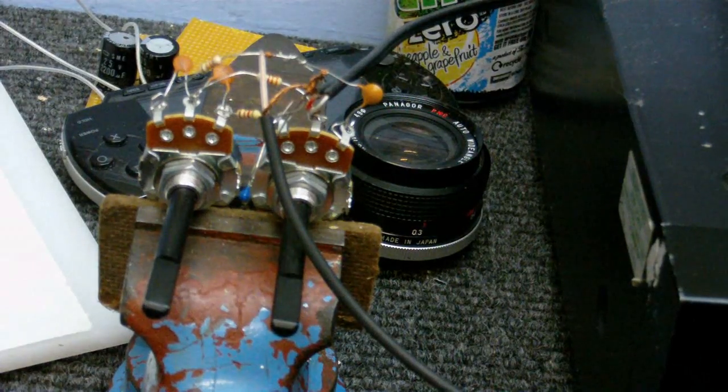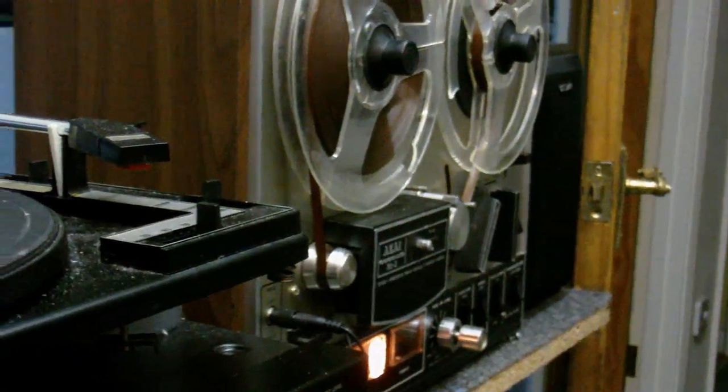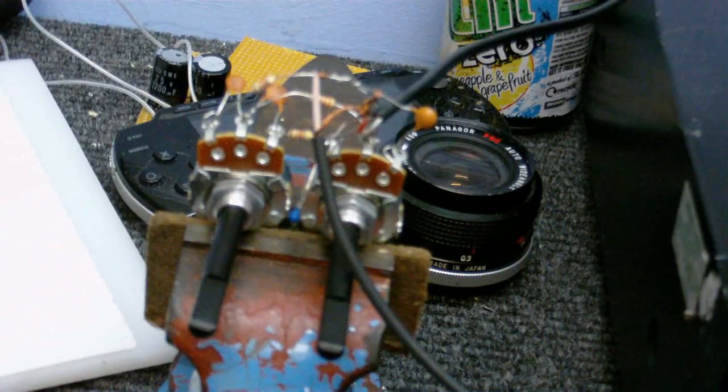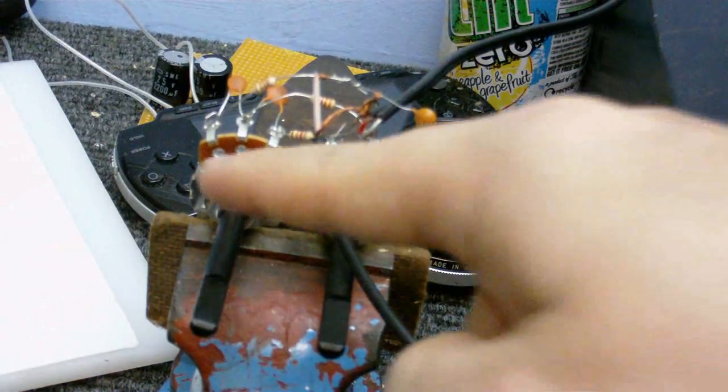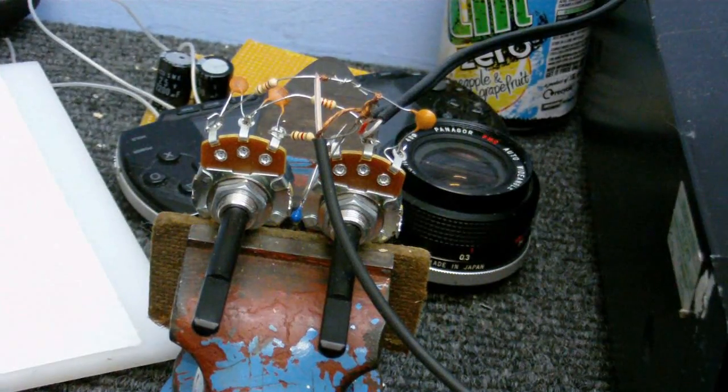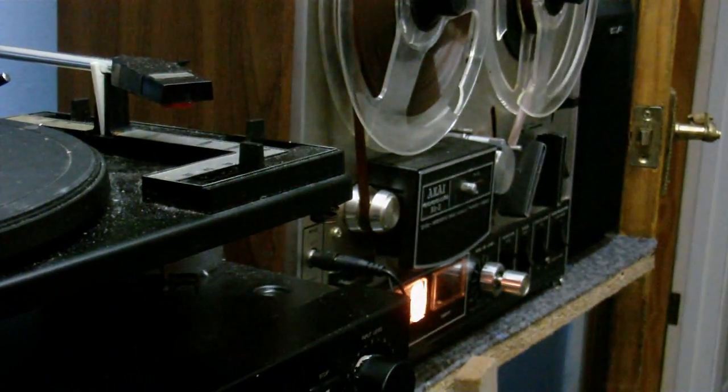I have the reel-to-reel queued up with some music and I'm going to play some music through the tone control and we'll see how good it works. Now what's the betting that one of these controls or maybe even both of them are going to be the wrong way around? I'll just start the reel-to-reel now and we'll see what we get.